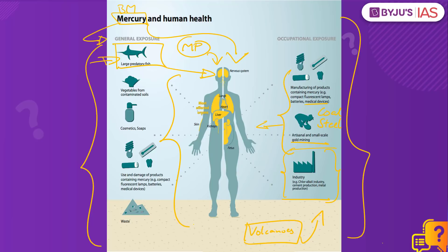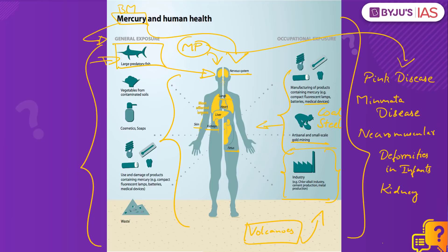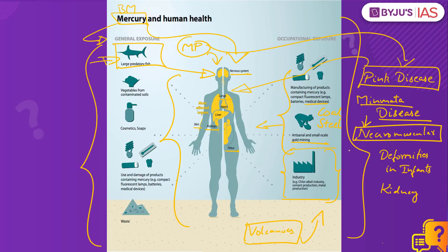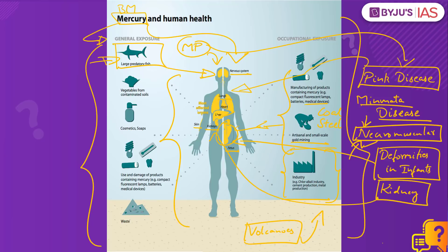Mercury is extremely hazardous to human beings as it severely affects several organs and functions, including the nervous system, lungs, kidneys, skin, and fetal development. Mercury poisoning is known to cause diseases such as pink disease, which primarily affects the skin and hair, and Minamata disease. It has a severe impact on neuromuscular functioning, leading to muscle weakness. It affects motor functions and abilities, and leads to deformities in infants as it affects fetal development in pregnant women. It also leads to failure and dysfunction of organs including the kidney, liver, heart and lungs. Mercury poisoning is one of the most serious cases of environmental disasters.